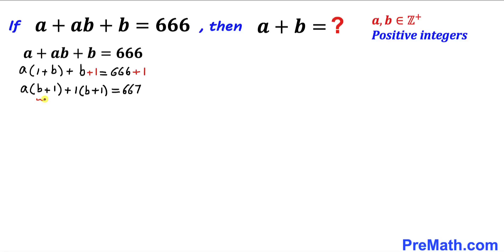Now we can see we have two factors on the left-hand side, so we are going to put 667 into two factors as well.